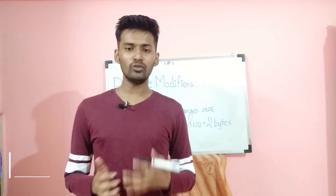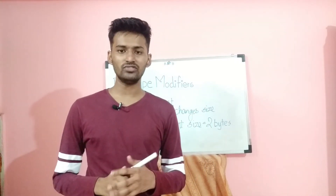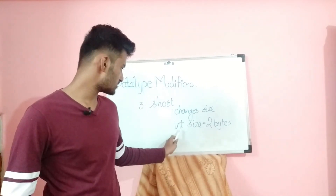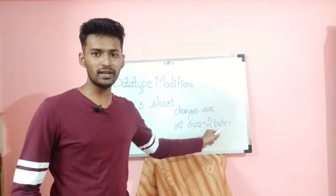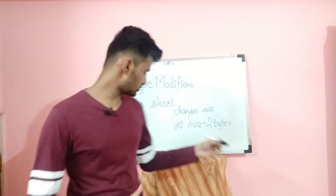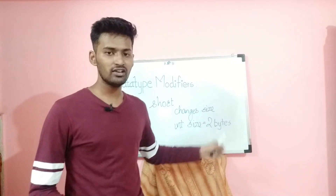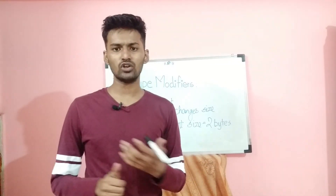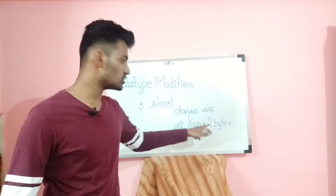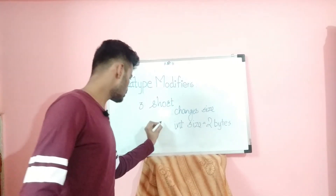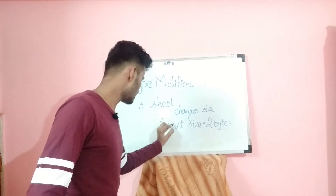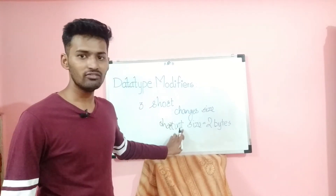Moving on to data type modifiers that change the size of the variable: the next one is short. Using short with int changes the size of the integer to 2 bytes. Normally the size of int is 4 bytes or 8 bytes depending on whether the OS is 32-bit or 64-bit, but using short int always changes it to 2 bytes regardless of the OS. So short int will always have 2 bytes.